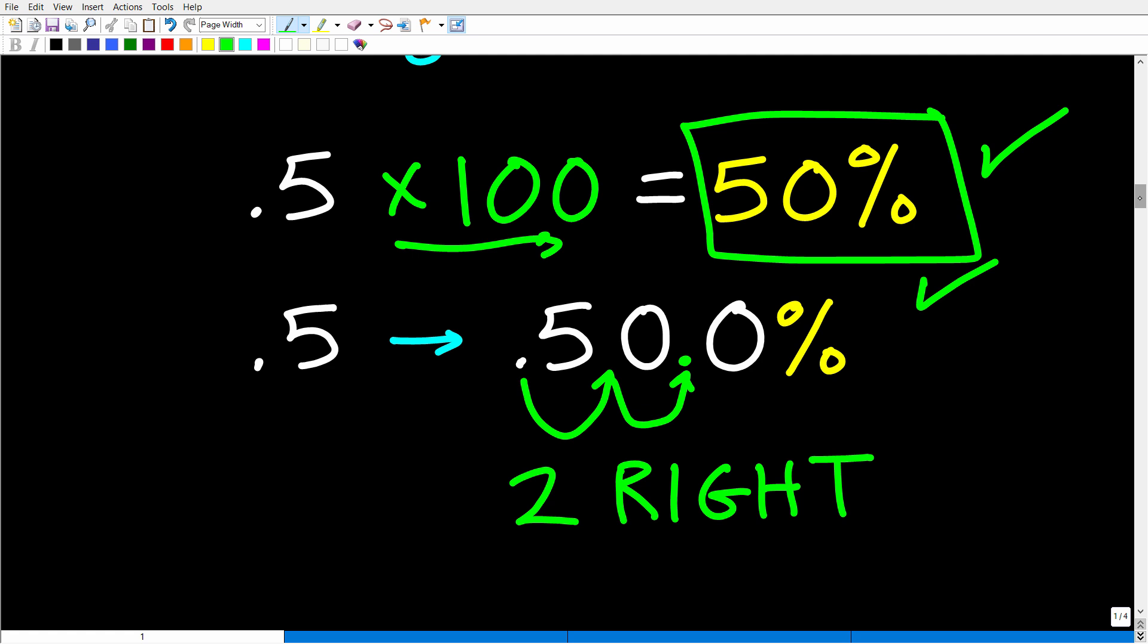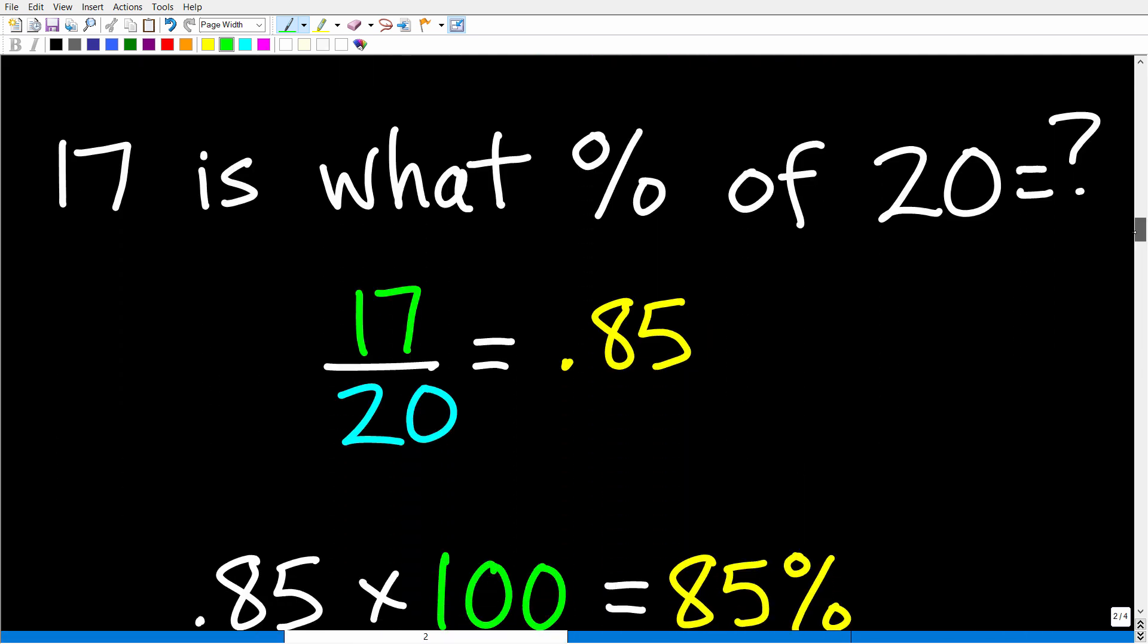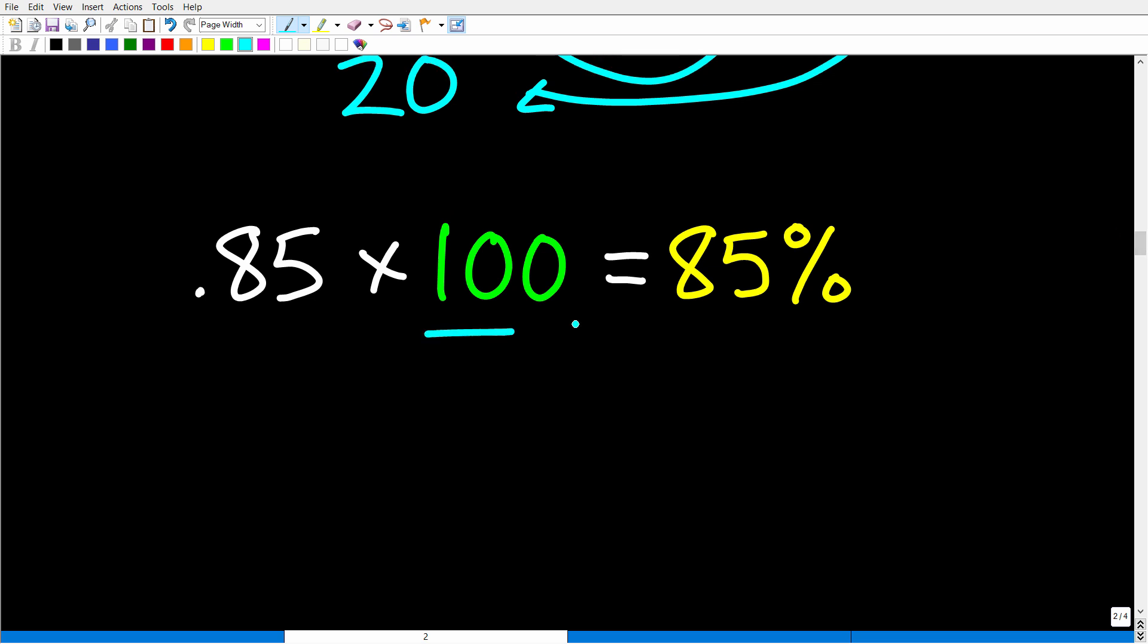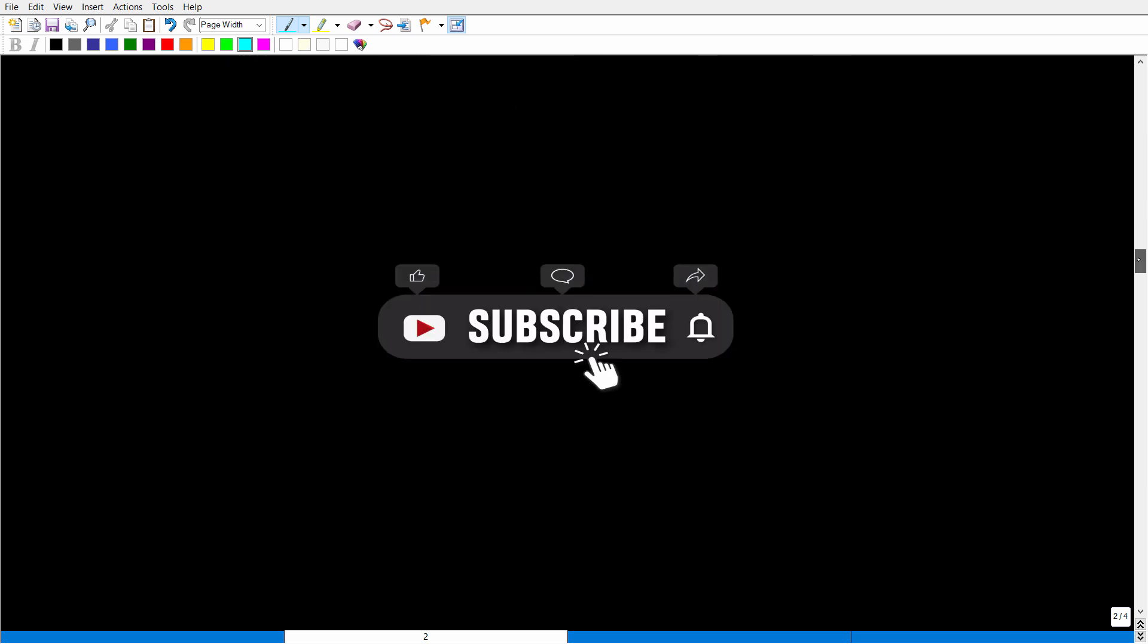Now, if you understand that, then we can use that knowledge to answer this question right here. 17 is what percent of 20? So what is the comparison? Well, we're going to compare the part to the whole, and 17 divided by 20 in our calculator is 0.85. Again, that is a decimal. That's not a percent, but we can change that decimal to a percentage by multiplying by 100. So 0.85 times 100 is 85%, or I just simply move that decimal point over two places to the right, and it becomes a percentage. All right, so that is basic percent skill one, and let's go to talk about the second percent skill.